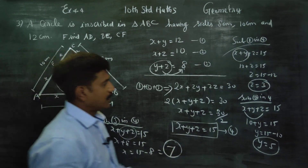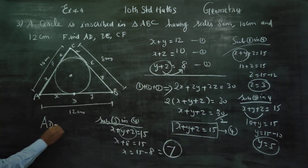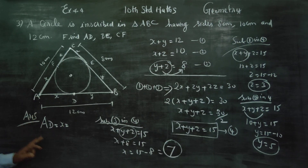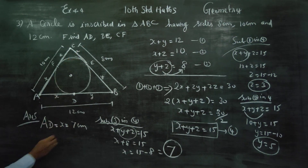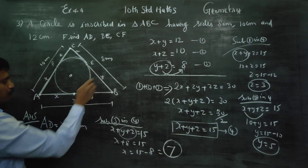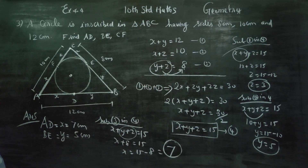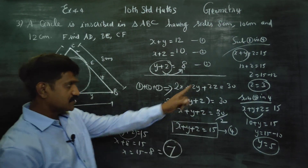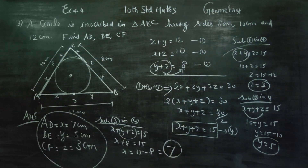Therefore y equals 15 minus 10, so y equals 5. The final answers are: AD equals x, BE equals y equals 5 centimeters, and CF equals z equals 3 centimeters. Thank you.